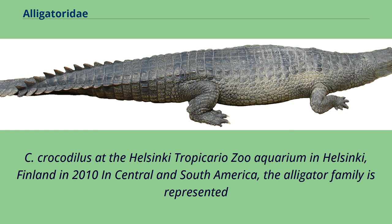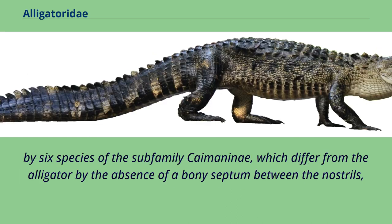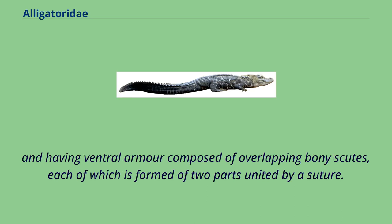In Central and South America, the alligator family is represented by six species of the subfamily Caimaninae, which differ from the alligator by the absence of a bony septum between the nostrils, and having ventral armor composed of overlapping bony scutes, each of which is formed of two parts united by a suture.